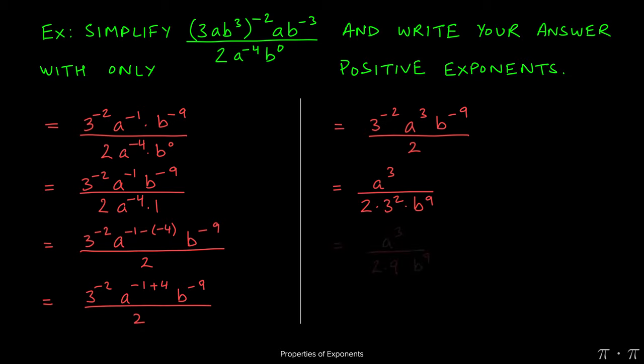At this stage, we can recognize that 3 squared is just 9, and 2 times 9 in the denominator gives us 18. Now we do one final lookover of one final check. All the terms have positive exponents in both the numerator and the denominator, and nothing can be simplified further. That's it.